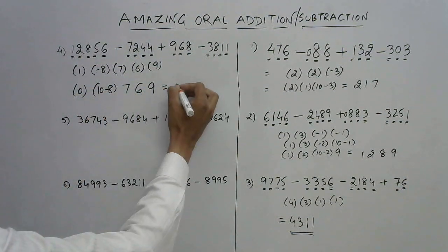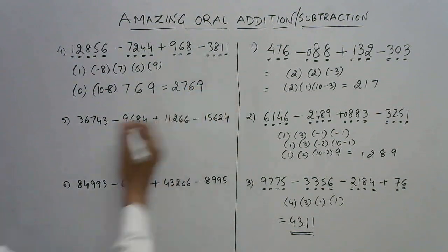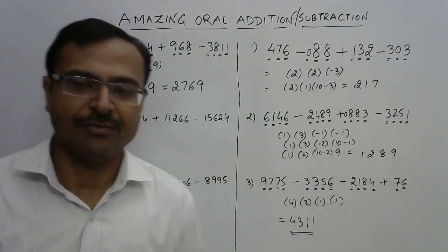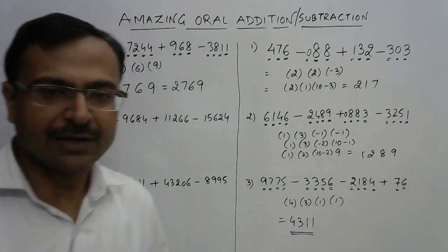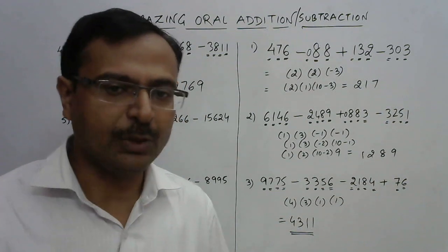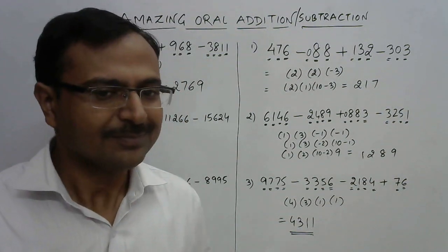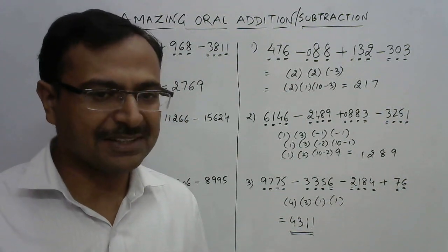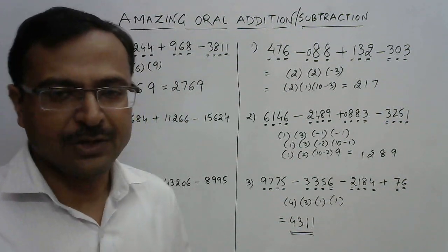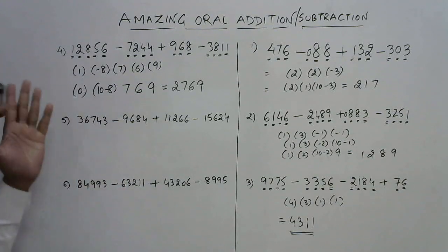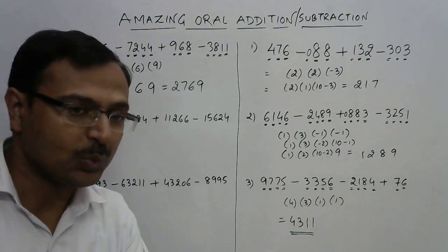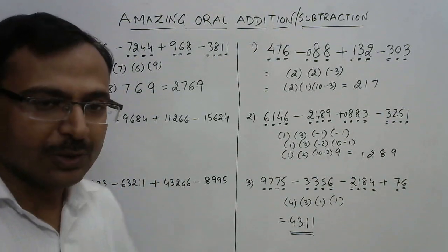So: 9 comes as it is, 6 comes as it is, 7 comes as it is, this becomes 10 minus 8, and this 1 becomes 1 lesser — that is 0. The answer of this question is 2, 7, 6, 9. See the speed with which we're calculating — without writing numbers one below the other. The traditional method vanishes here, and you have a new method to crack all competitive exams very comfortably.